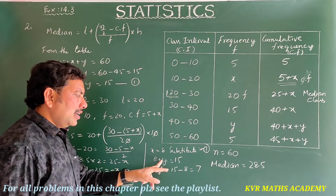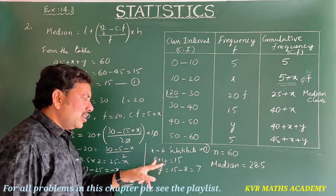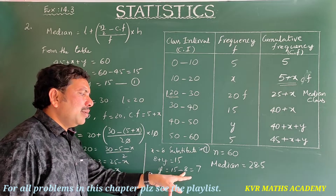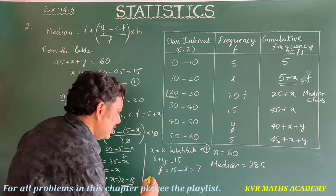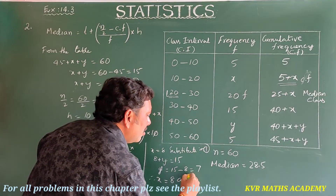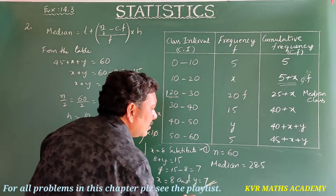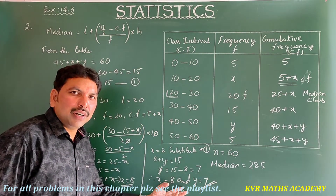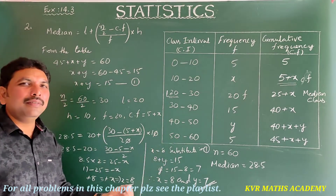Substituting x = 8 into Equation 1: x + y = 15, so y = 15 − 8 = 7. Therefore x = 8 and y = 7.